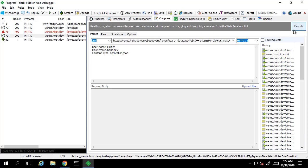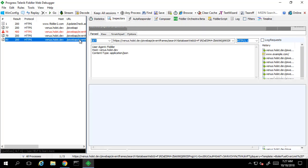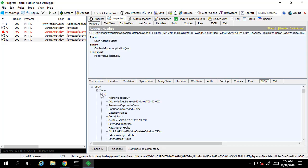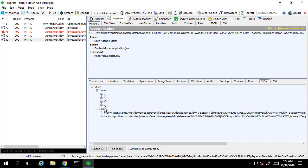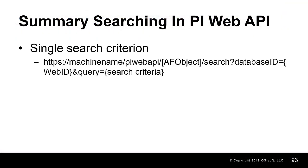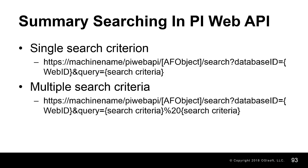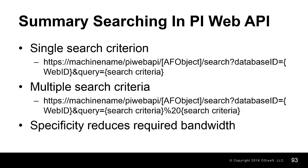If we execute this request, we see that we narrowed our list even further. We've taken a brief look at the search capabilities in the PI Web API as well as how to interpret some of the documentation for it. We made a simple request using a single filter criterion for a template, and we made a more complex multi-criteria request using attribute value filter as well. We've only just scratched the surface of the complexity of the search functionality in the PI Web API, but this should be sufficient for you to begin using the filter criteria to optimize your applications to retrieve only the necessary information.